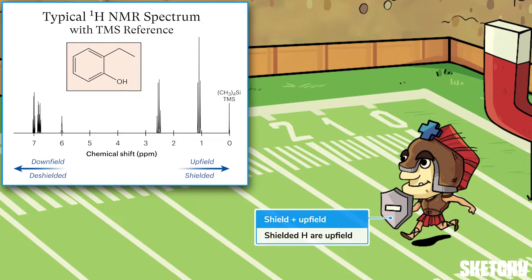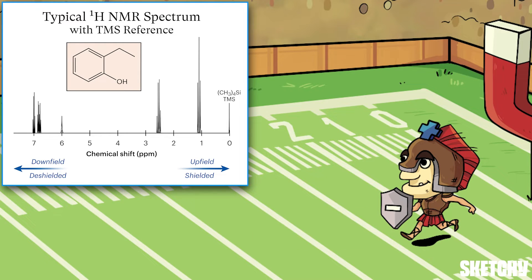The opposite end of the spectrum, down near 10 parts per million, is called — you guessed it — downfield. Bear in mind that upfield and downfield are relative terms, so a peak at two parts per million would be considered upfield of a peak at five ppm.